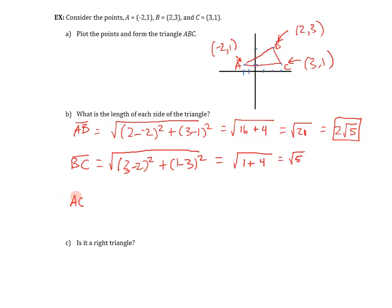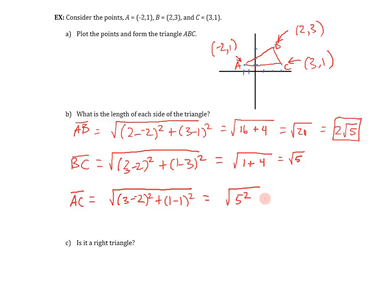For side AC: distances are always positive, so CA and AC are the same length. Taking C minus A: √[(3−(−2))² + (1−1)²] = √(5² + 0²) = √25 = 5. You can verify this visually — since both points have y = 1, you're simply moving 5 units horizontally from A to C.